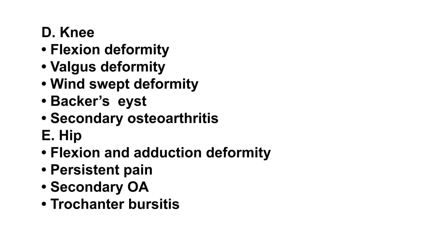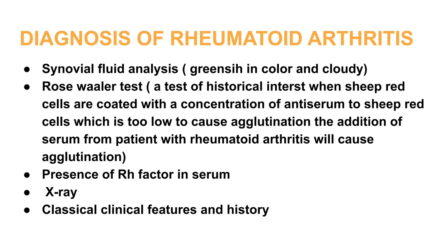Knee deformities include flexion deformity, valgus deformity, and wind-swept deformity, as well as secondary osteoarthritis. Hip involvement includes flexion and adduction deformity, secondary osteoarthritis, and trochanteric bursitis.